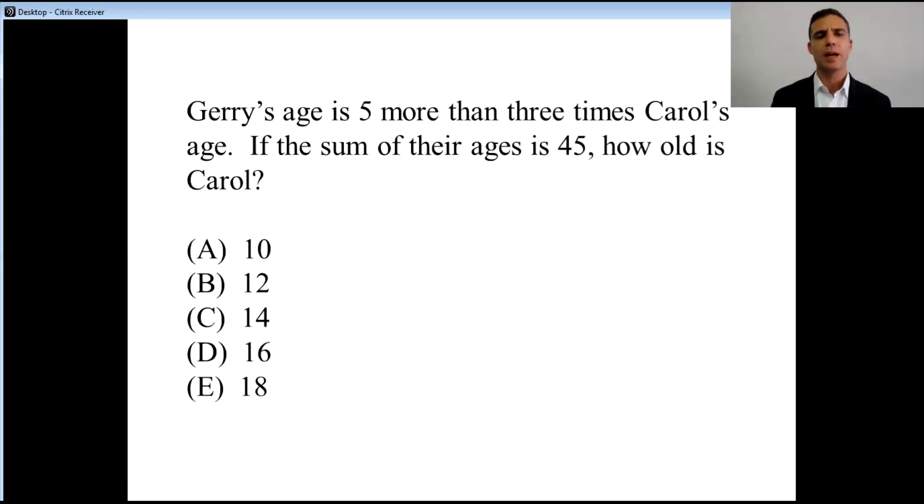Jerry's age is five more than three times Carol's age. If the sum of their ages is 45, how old is Carol? When we take a look at this question and we circle how old is Carol, we know that we want one final value. We can't make up Carol's age.